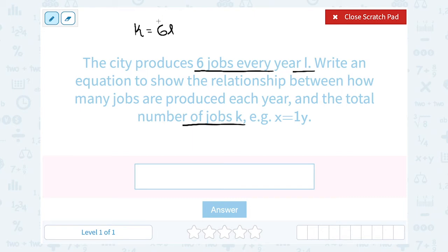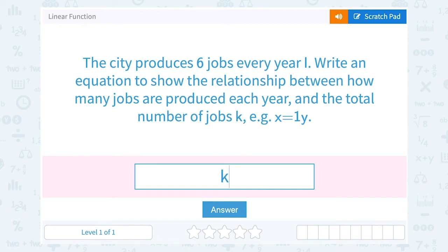Right? Because they're producing six jobs every one year. So all together we have K equals six L.